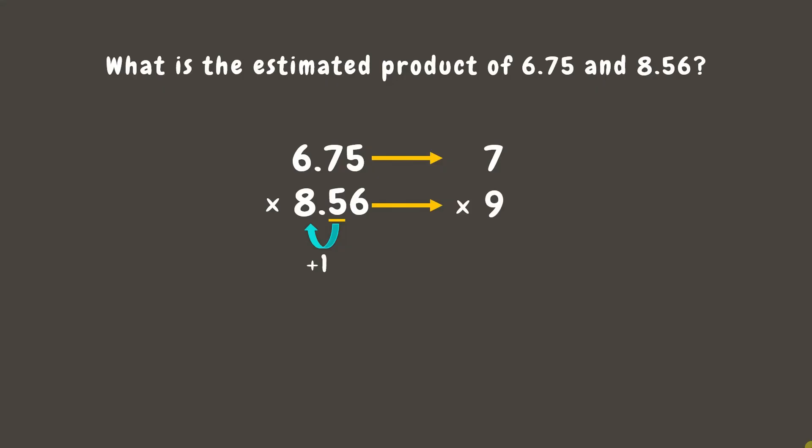Now, let's multiply. It's 7 times 9, which is 63. Therefore, the estimated product is 63.